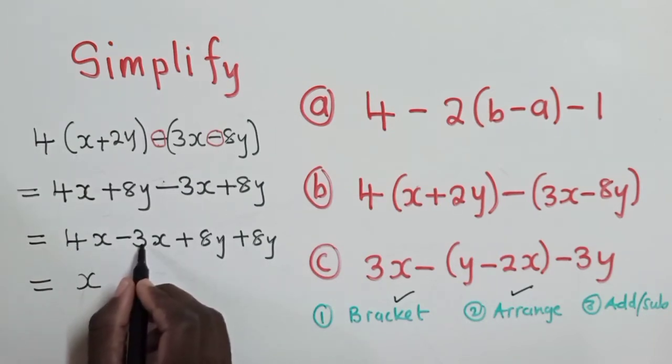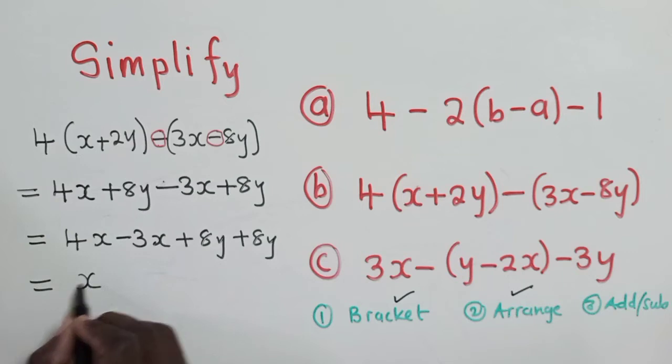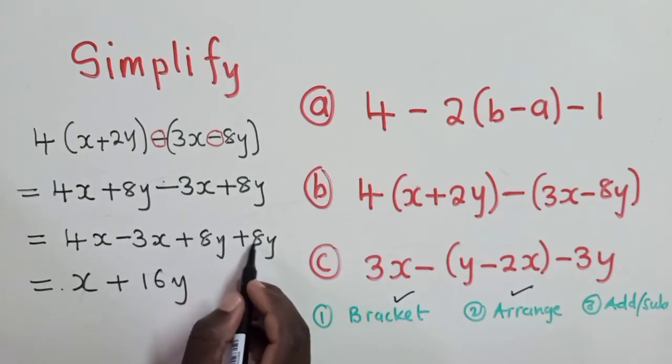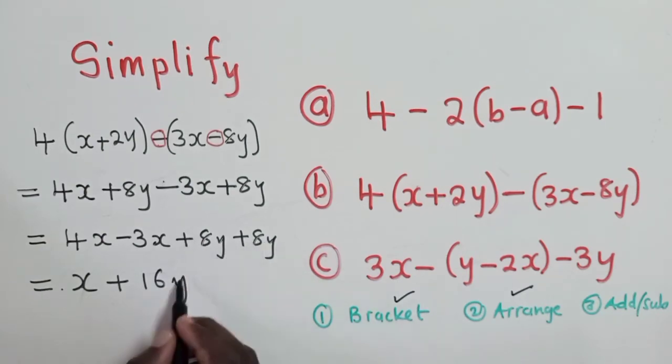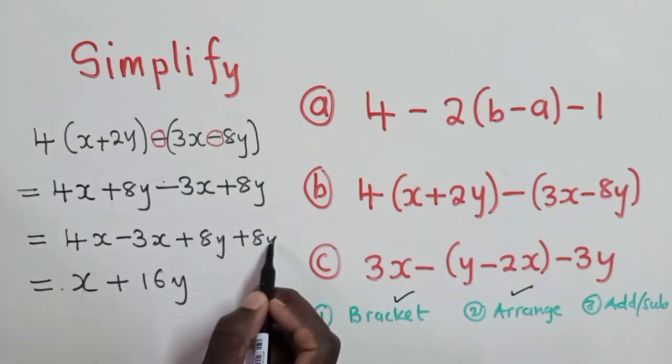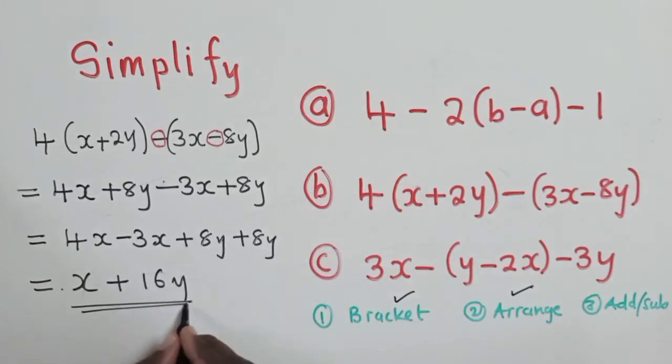Because 4 minus 3, it's 1. And you get the letter x. So it will be 1x, of which we just write it as x. We know that there is a 1 in front. Here we shall have a plus 16y. Because 8y plus 8y, it will be 16y. 8 plus 8, 16. And get the sign, which is the y. So this is what you do.